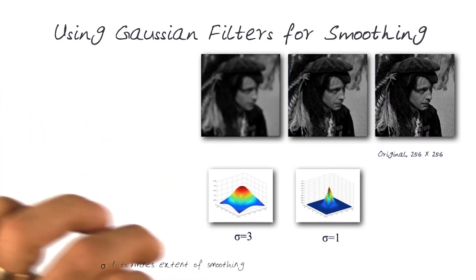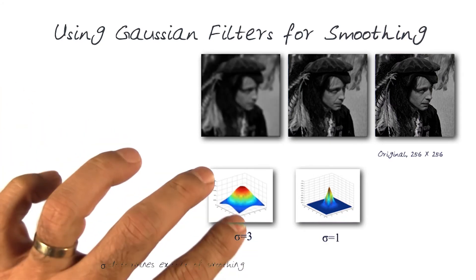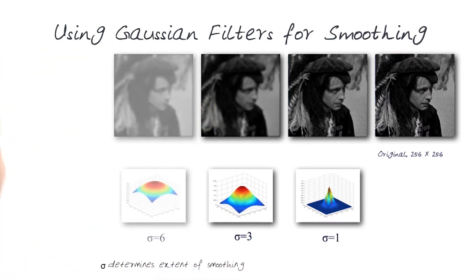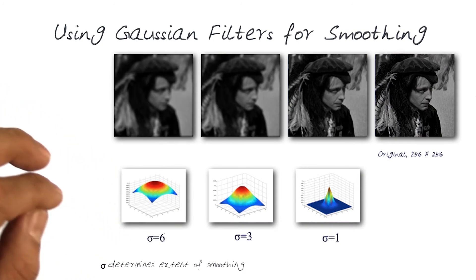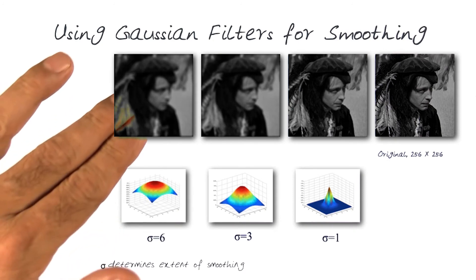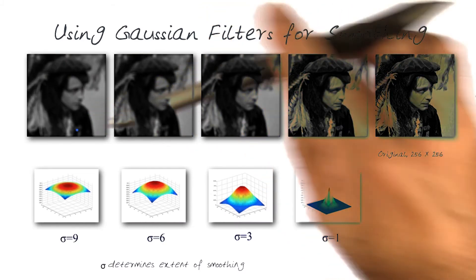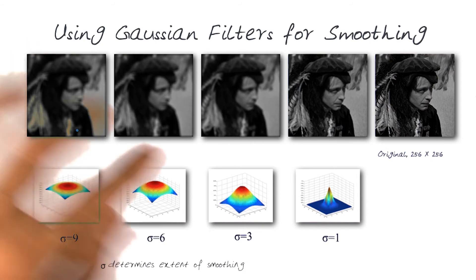As I increase the variance to sigma 3, you can start noticing more blurring. Similarly, as I move to sigma 6, even more blurring is visible. And finally, moving all the way up to sigma 9, it's the most blurred image in the sequence.